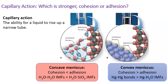Mercury displays the complete opposite behavior. The only adhesive forces between polar glass and nonpolar mercury atoms are dispersion forces, the weakest of all the IMFs. However, the atoms of mercury form very strong metallic bonds with one another. Because mercury's cohesive forces are stronger than the adhesive forces between mercury and glass, mercury will minimize its contact with the glass surface and maximize its contact with other mercury atoms, forming a convex meniscus.